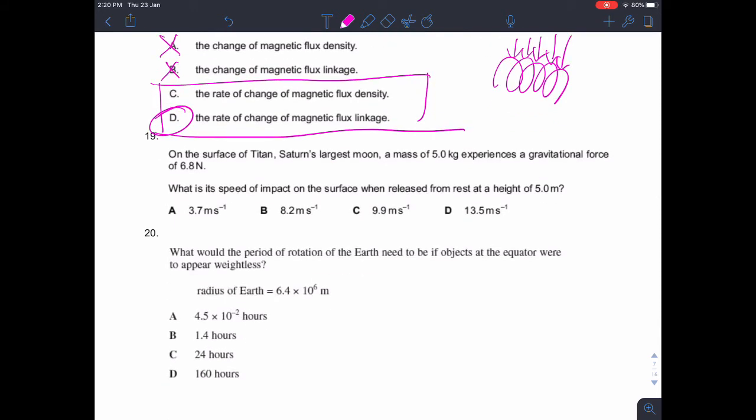On the surface of Titan, Saturn's largest moon, a mass of 5 kilograms experiences a gravitational force of 6.8 newtons. What is its speed of impact on the surface when released from rest at a height of 5 meters? So the gravitational field strength is given by force per unit mass. In this case, the gravitational field strength is 6.8 divided by 5, which is 1.36.